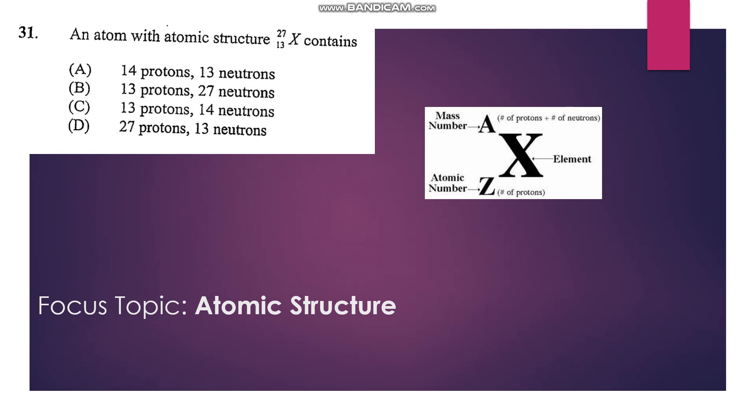Number 31: An atom with atomic structure 27/13 X contains... Know that the atomic number is the number at the bottom, 13, and is the number of protons. And the number at the top is the number of protons plus neutrons. So if we subtract 13 from 27, we'd get 14. So we have 13 protons and 14 neutrons.